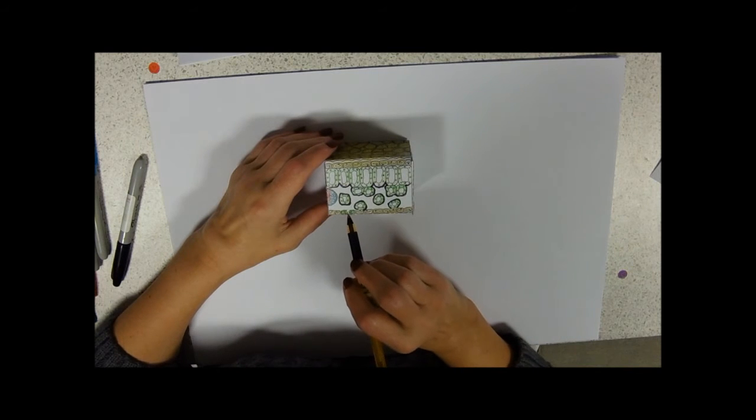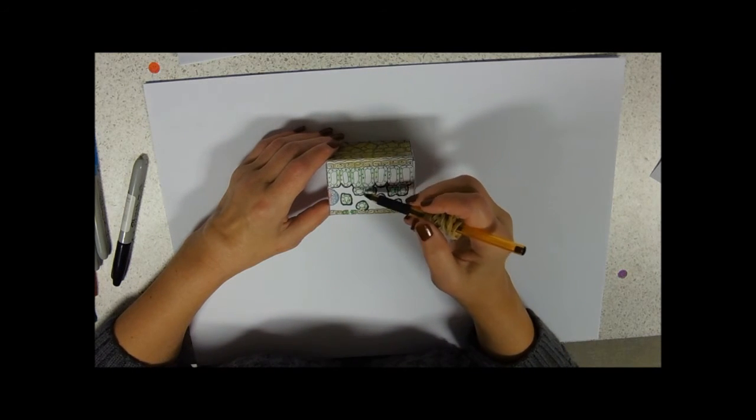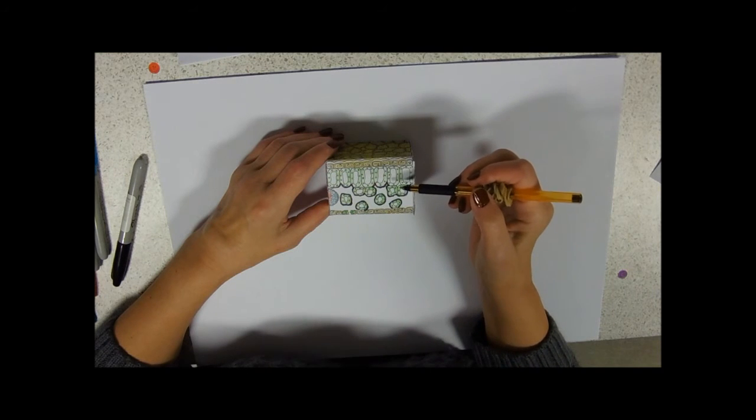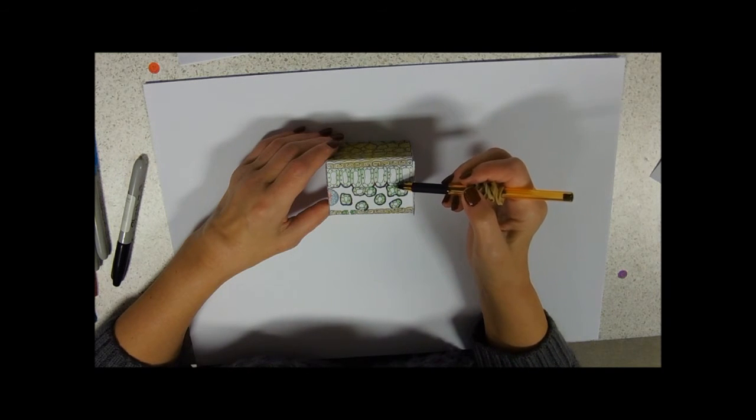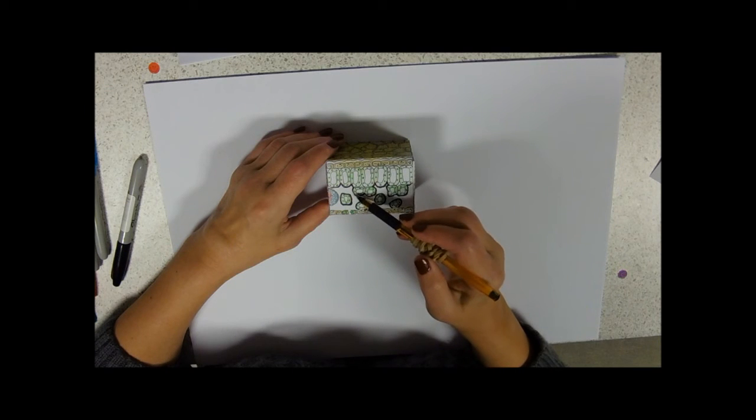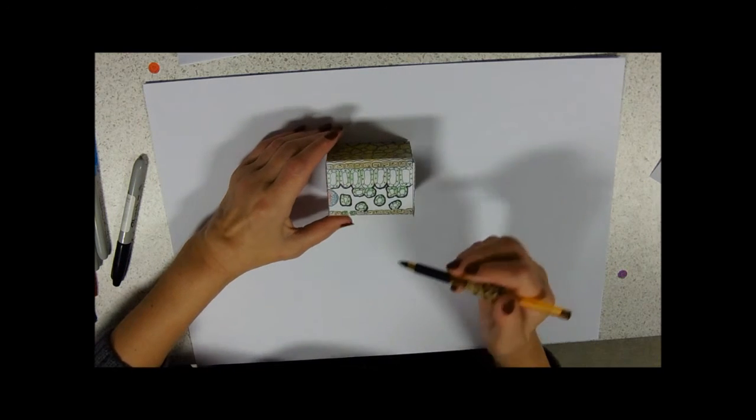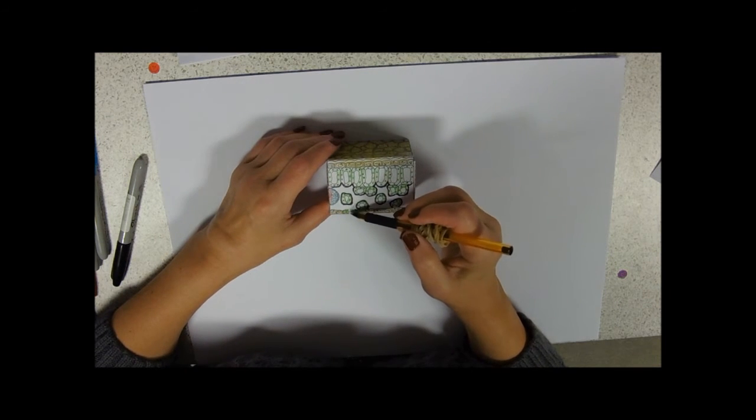We've got carbon dioxide coming in, diffusing through to the photosynthetic cells and being used up in photosynthesis, and in photosynthesis, oxygen returned into the airspaces, building up there and then diffusing out through the stoma between the two guard cells.